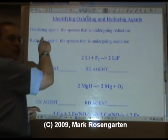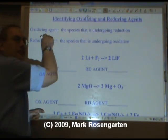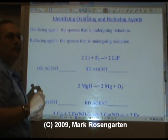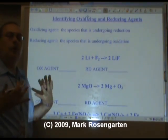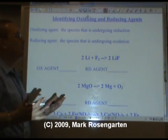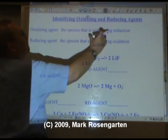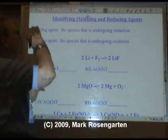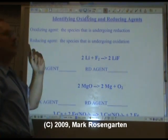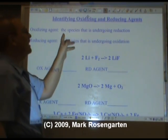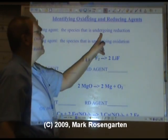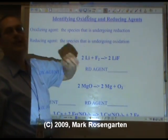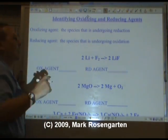Now remember, oxidation is a loss of electrons. Something can only lose electrons if there's something else there that gains them. So the oxidizing agent is the species that undergoes reduction.